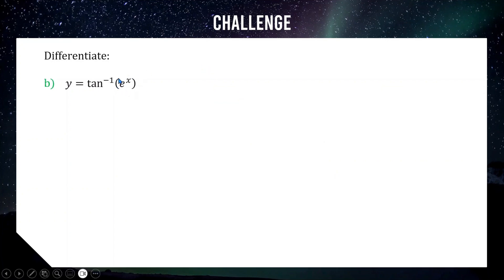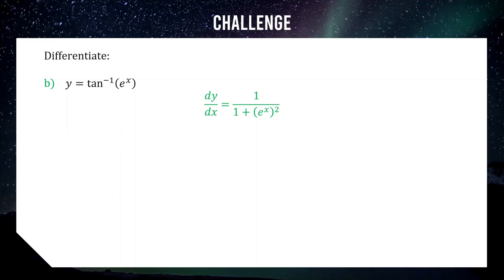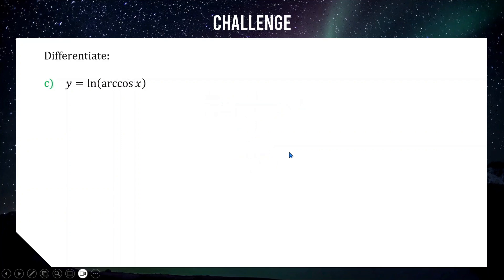Challenge b: the derivative of tan inverse of e to the x. Starting with 1 over 1 plus (e to the x) squared, then multiplying by the derivative of the inner function. The derivative of e to the x is e to the x, so we multiply by e to the x. Putting e to the x on the numerator and simplifying (e to the x) squared to e to the 2x, our final answer is e to the x over 1 plus e to the 2x.